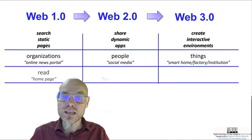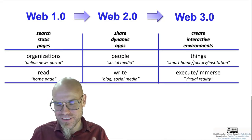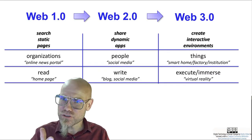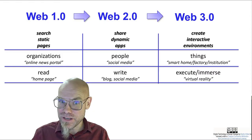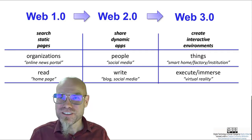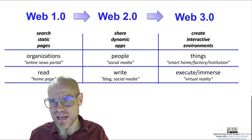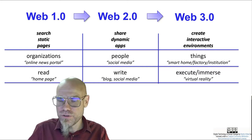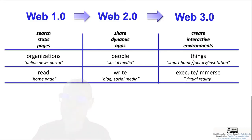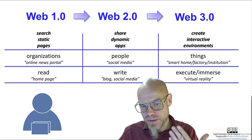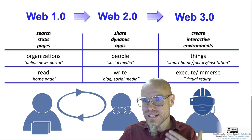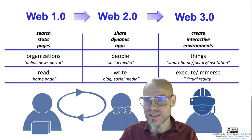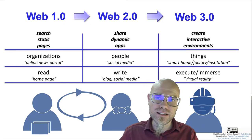You can think about the level of interactivity and immersiveness. Web 1.0 was more passive reading. 2.0 was social media sharing — everybody had a web page because Facebook provided one for you, so you didn't even need to know HTML. You could write a blog; blogs are certainly web 2.0. And virtual reality would be more immersive 3.0 — passive reading, then social interaction, then immersion with intelligent things.